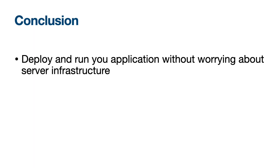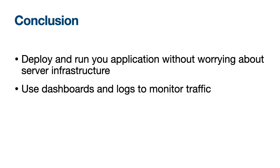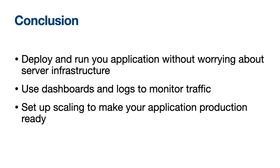App Engine allows you to deploy and run your application without having to manage the underlying infrastructure. In this tutorial, we learned how to deploy a Java Spring Boot application to our own App Engine instance. We've only scratched the surface — there's a lot more we can do to make our application production ready. For example, we can use the App Engine dashboards and Cloud Logging to better monitor traffic and errors, and we can set up auto-scaling or specify the number of instances manually to accommodate more traffic as more users start using our application. Thank you for watching — I hope you found this tutorial helpful and I'll see you in the next one.